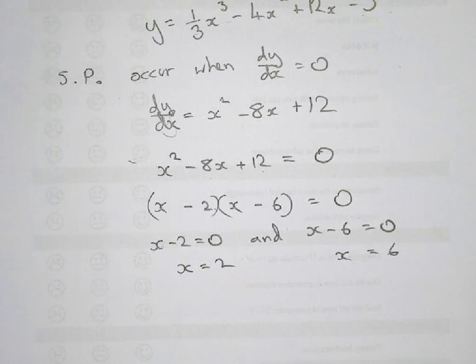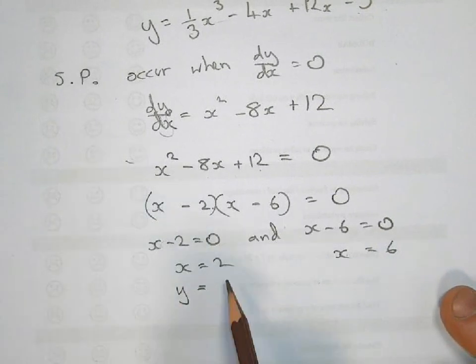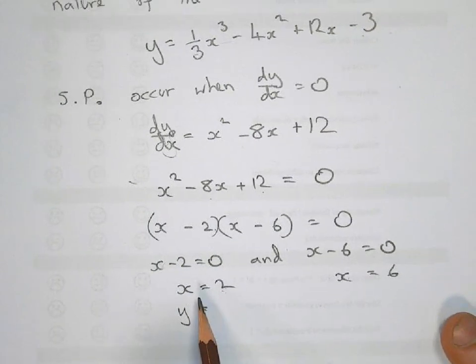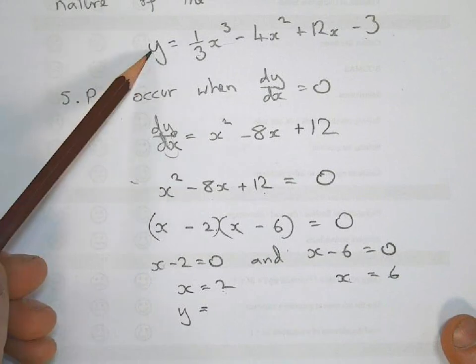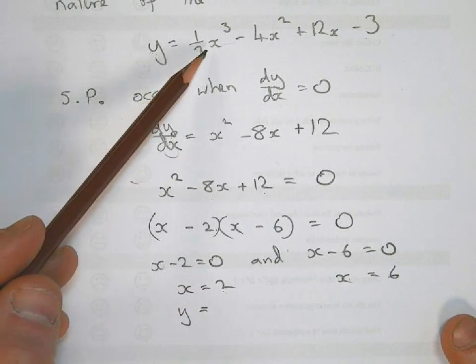Now we need to find out the y-coordinates for the turning points. So we basically want to work out the whole coordinate. You've got the x part, now you want to work out the y part. And to do that, you substitute the x into the original function, and the original function is this one up here.